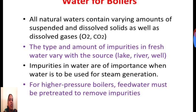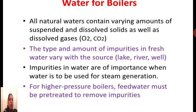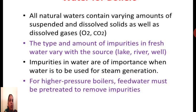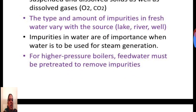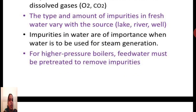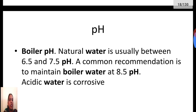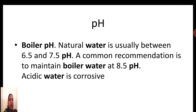Boiler water contains both suspended solids and dissolved solids as well as dissolved gases which affect boiler performance. The dissolved gases that normally affect performance are oxygen and carbon dioxide. The type and amount of impurities in fresh water varies with the source — lake, river, or well — so the quality of makeup water will vary. It is important to characterize these impurities and give proper treatment, especially for high pressure boilers where feed water must be pre-treated.